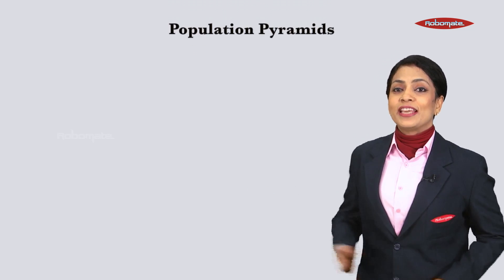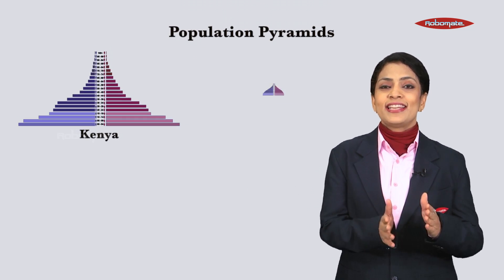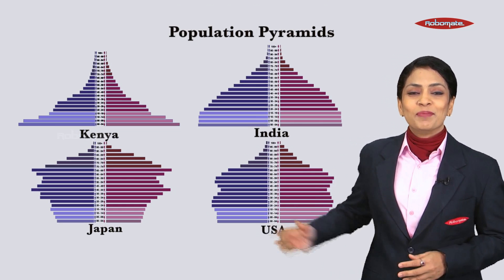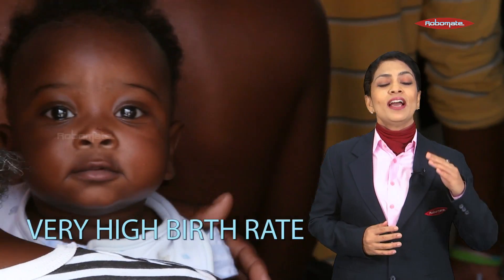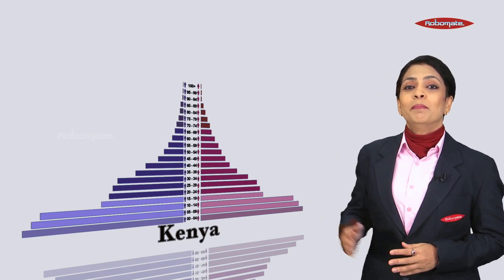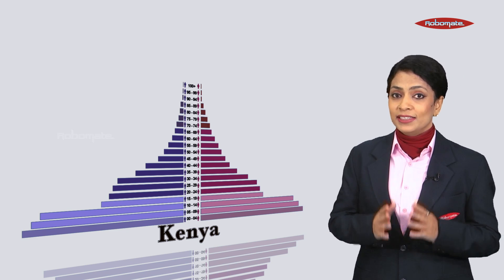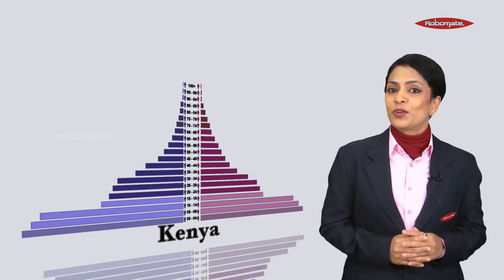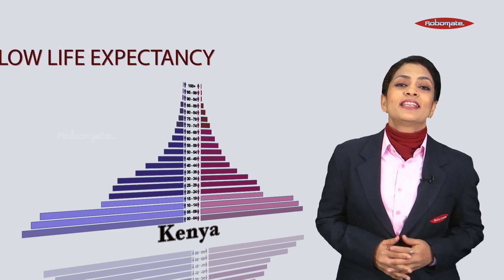Here you will see four population pyramids of Kenya, India, Japan, and the USA. Let's begin with Kenya. Kenya's population pyramid has a very wide base, indicating a very high birth rate. The population pyramid rapidly narrows towards the top, shown by the bar lines getting rapidly shorter. The size of the top is very narrow, meaning fewer people live in the older age groups.